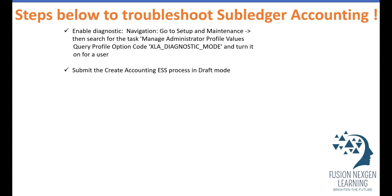Second, you have to run Create Accounting in draft mode in order to generate all the diagnostic data. Before running the Accounting Event Diagnostic report, you must run the Create Accounting ESS process for the sub-ledger — such as cost accounting, receipt accounting, payables, or receivables — whichever you would like to troubleshoot. Run Create Accounting in draft for all those sub-ledgers.